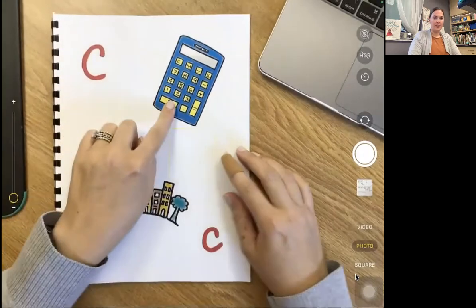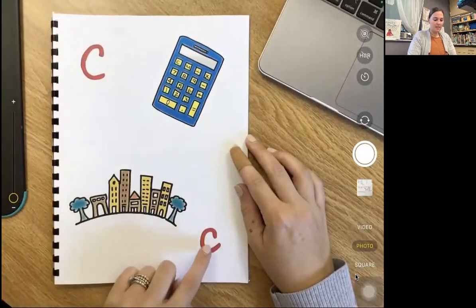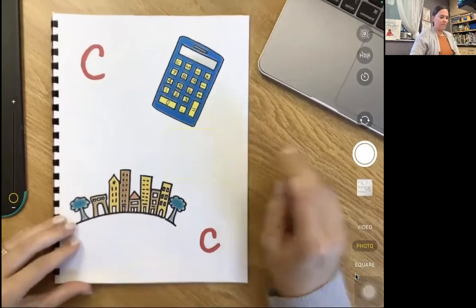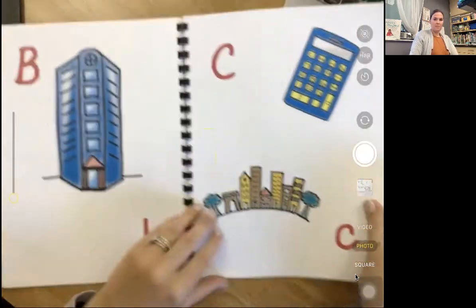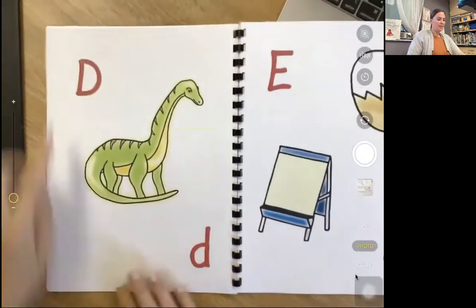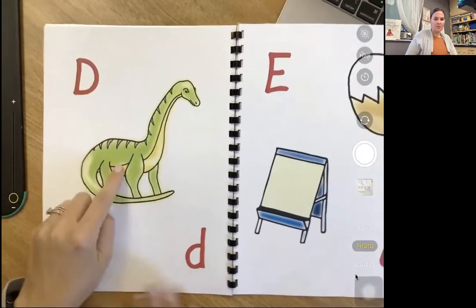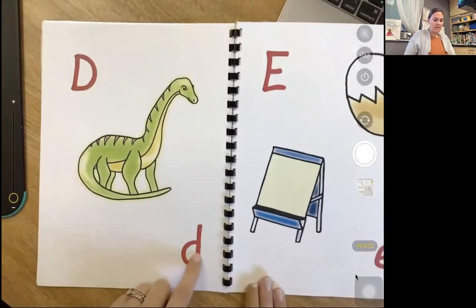C, cuh, calculator. C, suh, city. D, duh, dinosaur. D, duh, dinosaur.